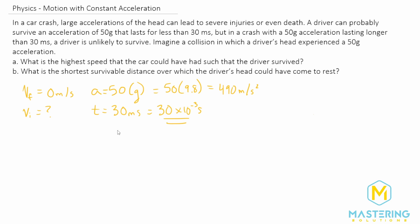So to do that, we're going to use the kinematic equations and we want one that has all of the variables in here plus the one that we're looking for. So what we'll be using is V final is equal to V initial plus acceleration times time.